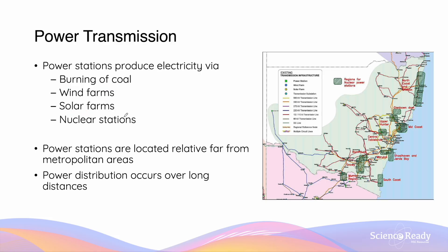Power stations usually require large land to build, and that's why they're usually located relatively far away from metropolitan areas. You can see there are numerous power stations in remote regions of New South Wales, relatively far away from metropolitan areas in the central coast, in Sydney and south of Sydney. As a result of their remote location, the distribution of electricity usually occurs over long distances.